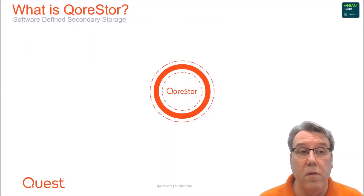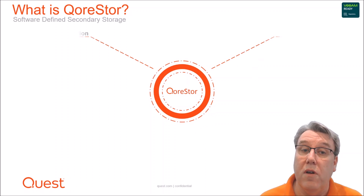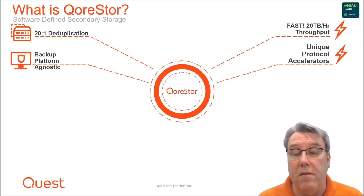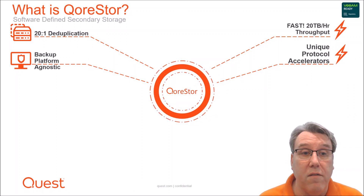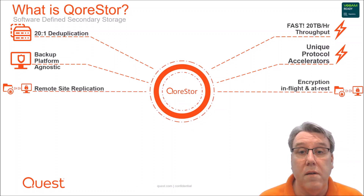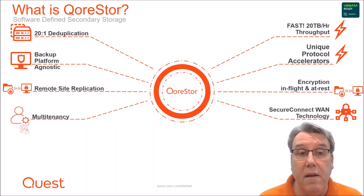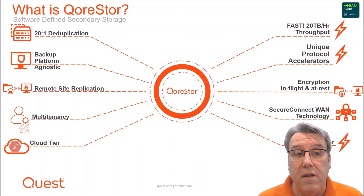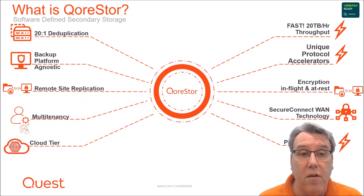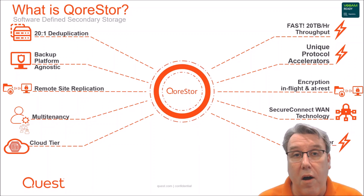So what is CoreStore? CoreStore is a software-defined secondary storage solution that provides deduplication, compression, and encryption technologies. It's platform agnostic in terms of which backup solution it supports — up to 13 of those. It has unique protocol accelerators, includes replication, encryption for in-flight and at-rest data sets, has a level of multi-tenancy to stop data bleed, includes secure connect WAN technology allowing secure replication and a level of resilience over higher latency WAN links. It also has a cloud tiering technology and a performance tier, providing cloud storage solutions as well as high performance recovery.